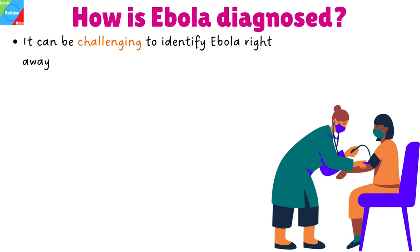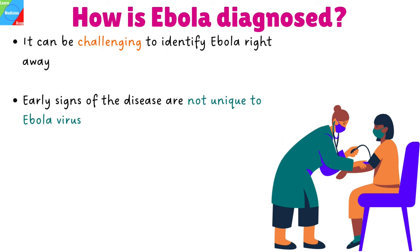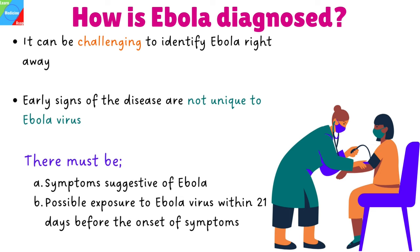How is Ebola diagnosed? It can be challenging to identify Ebola virus disease right away after infection. This is because early signs of the disease, such as a fever, headache, and weakness, are not unique to an infection with the Ebola virus. They are frequently present in people who have malaria and typhoid fever, which are more common conditions. To determine a possible diagnosis of Ebola virus disease, there must be a combination of symptoms suggestive of Ebola and a possible exposure to Ebola virus within 21 days before the onset of symptoms.